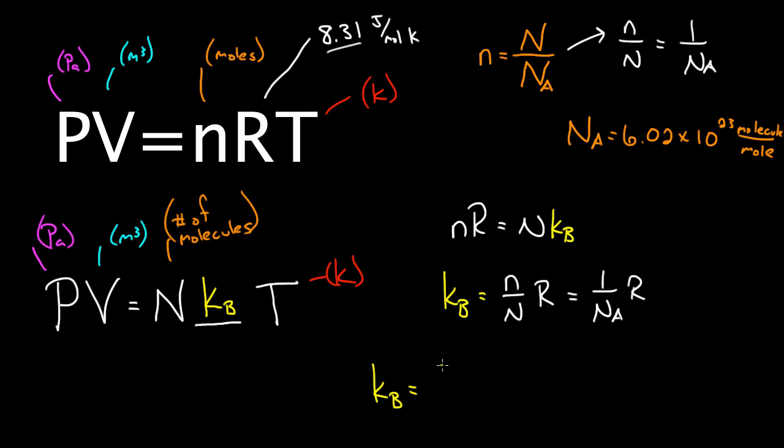And if you multiply that out, the gas constant, which is 8.31 joules per mole Kelvin, and divide by Avogadro's number, which is 6.02 times 10 to the 23rd molecules per mole. You'll get Boltzmann's constant, which equals 1.38 times 10 to the negative 23rd joules per Kelvin. This is Boltzmann's constant. This number right here is Boltzmann's constant.